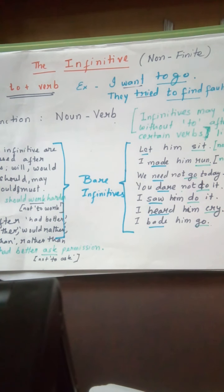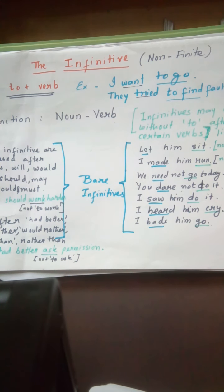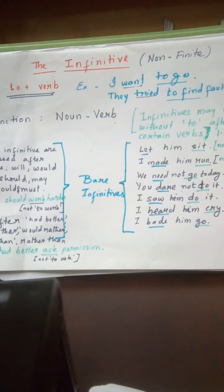Good evening. We will continue our discussion on non-finite verbs. As you remember, last time we had discussed the various types of non-finite verbs — that is, infinitives, gerunds, and participles. There are three types, and participle itself has three types of its own. Non-finite verbs are verbs which do not behave as verbs; they are not bound to the subject. Remember the stray dog picture — those are the stray dogs, not bound to the subject with a leash.